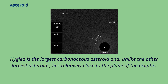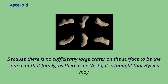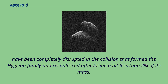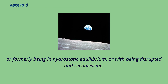Hygieia is the largest carbonaceous asteroid and, unlike the other largest asteroids, lies relatively close to the plane of the ecliptic. It is the largest member and presumed parent body of the Hygiean family of asteroids. Because there is no sufficiently large crater on the surface as there is on Vesta, it is thought that Hygieia may have been completely disrupted in the collision that formed the Hygiean family and recoalesced after losing a bit less than 2% of its mass. Observations taken with the VLT SPHERE imager in 2017 and 2018 revealed that Hygieia has a nearly spherical shape, consistent with it being in or formerly in hydrostatic equilibrium.